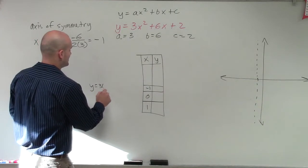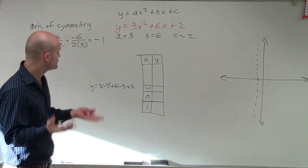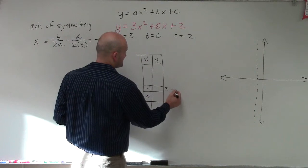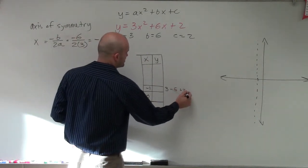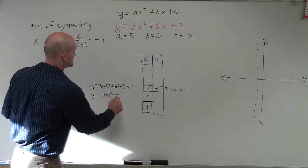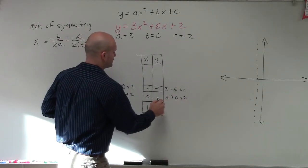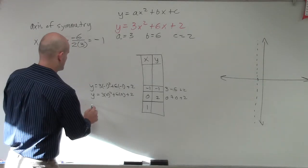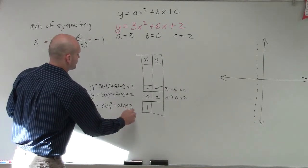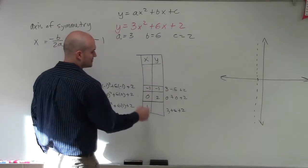For x equals negative 1: y equals 3 times negative 1 squared plus 6 times negative 1 plus 2. Negative 1 squared is 1, times 3 is 3; 6 times negative 1 is negative 6. So 3 minus 6 plus 2 gives y equals negative 1. For x equals 0: y equals 3 times 0 plus 6 times 0 plus 2, which gives y equals 2. For x equals 1: y equals 3 times 1 squared plus 6 times 1 plus 2, so 3 plus 6 plus 2 gives y equals 11.